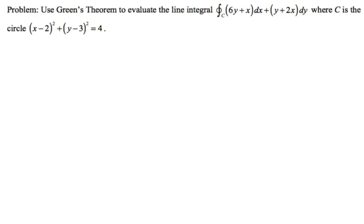Okay, in this video, we're going to do a Green's Theorem example where the region is defined by this circle here. So it's x minus 2 squared plus y minus 3 squared equals 4.